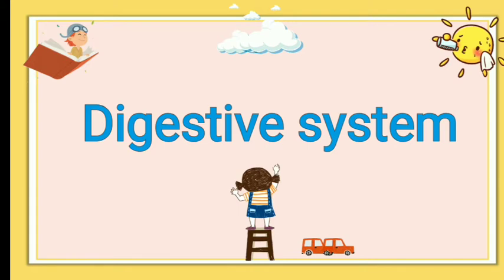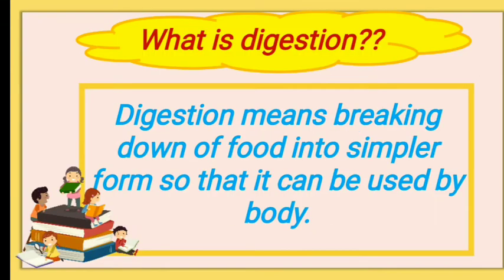But before going to the digestive system, we will discuss what is digestion. Digestion means breaking down of food into a simpler form so that it can be used by our body. We all need food for energy. We get energy by the process of digestion.